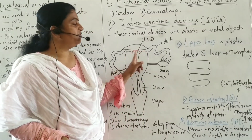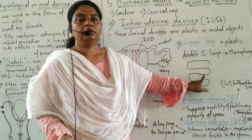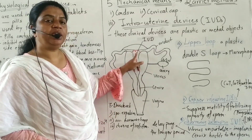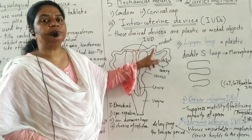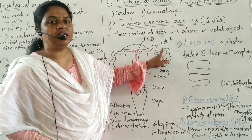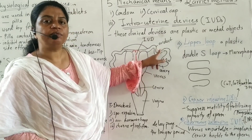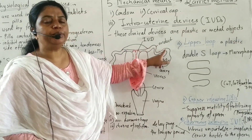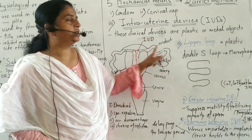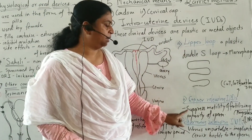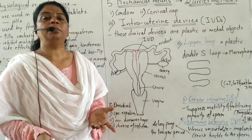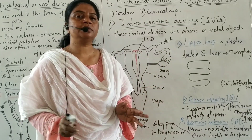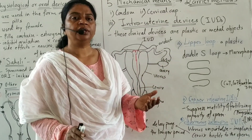These devices are fit into the uterus and prevent the entry of sperm into the fallopian tube, because the fallopian tube is the fertilization site — the ovum waits there for fertilization. So sperm entry is blocked into the fallopian tube by IUDs — Lippes loop, Copper T, and hormone-releasing IUDs. The Lippes loop is only a mechanical barrier; there is no release of copper or hormone.